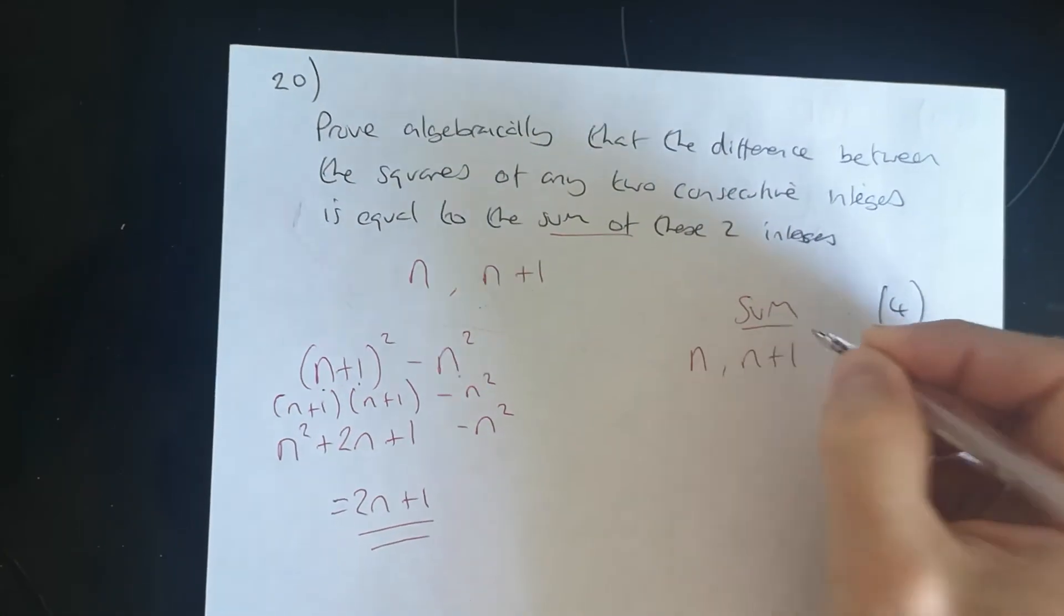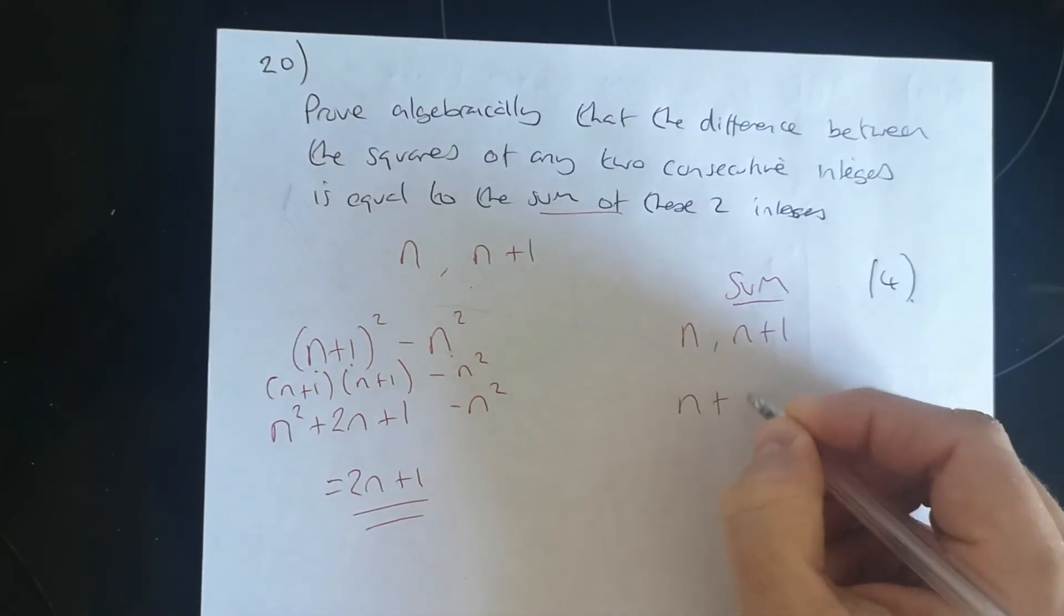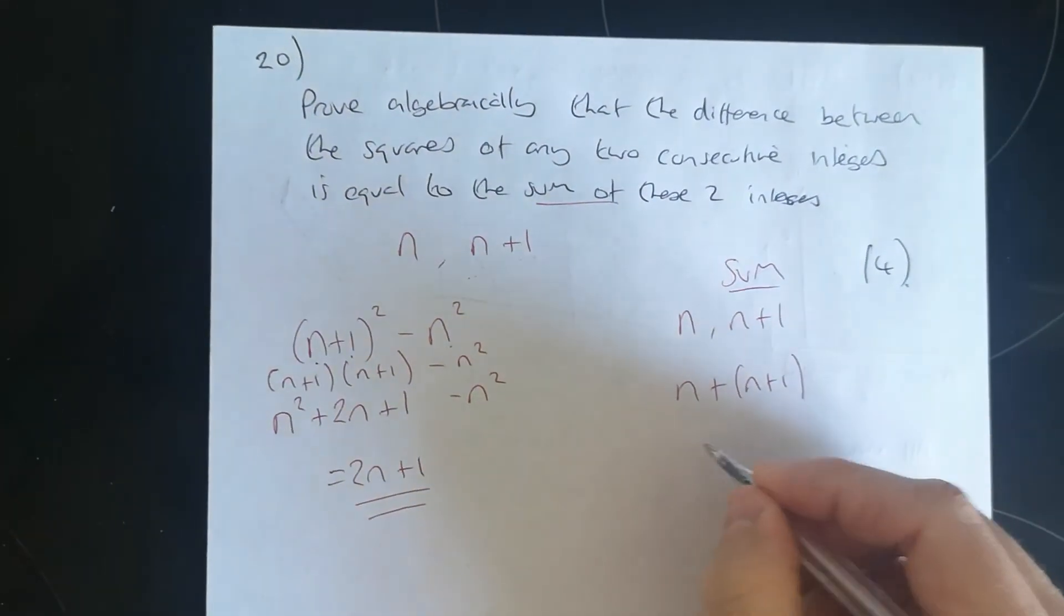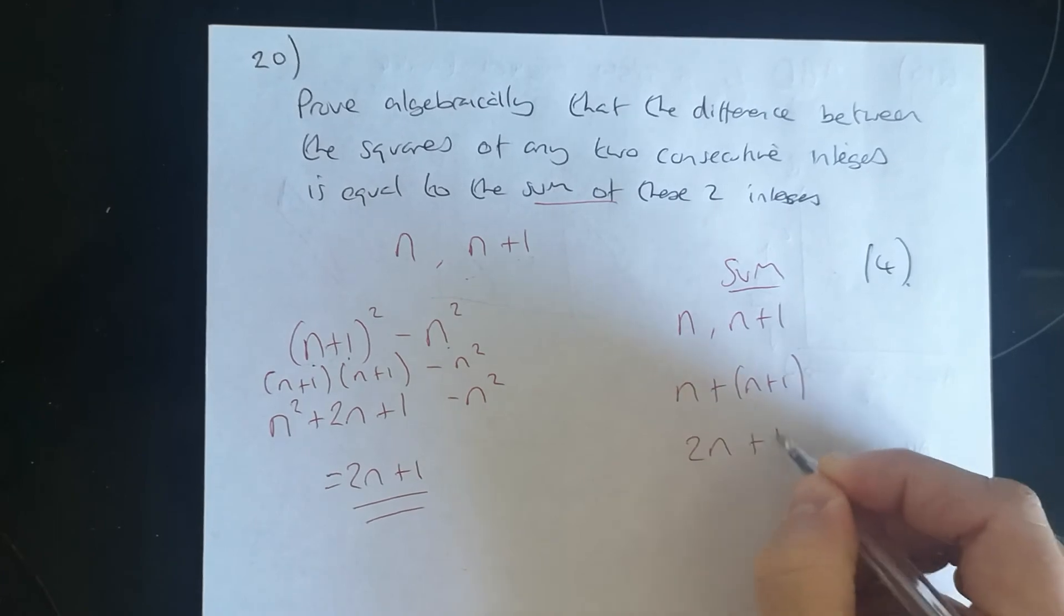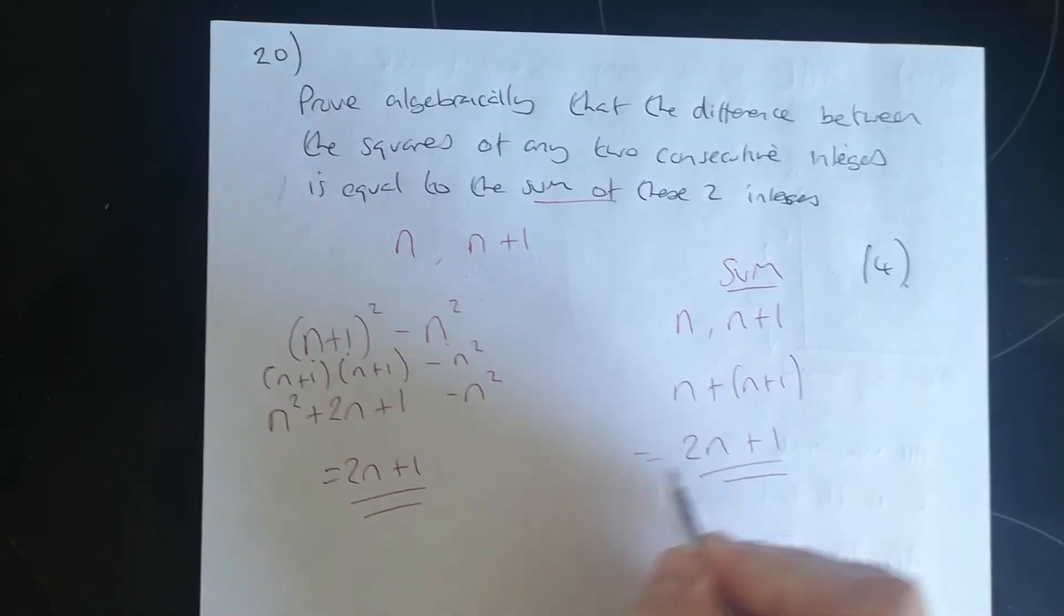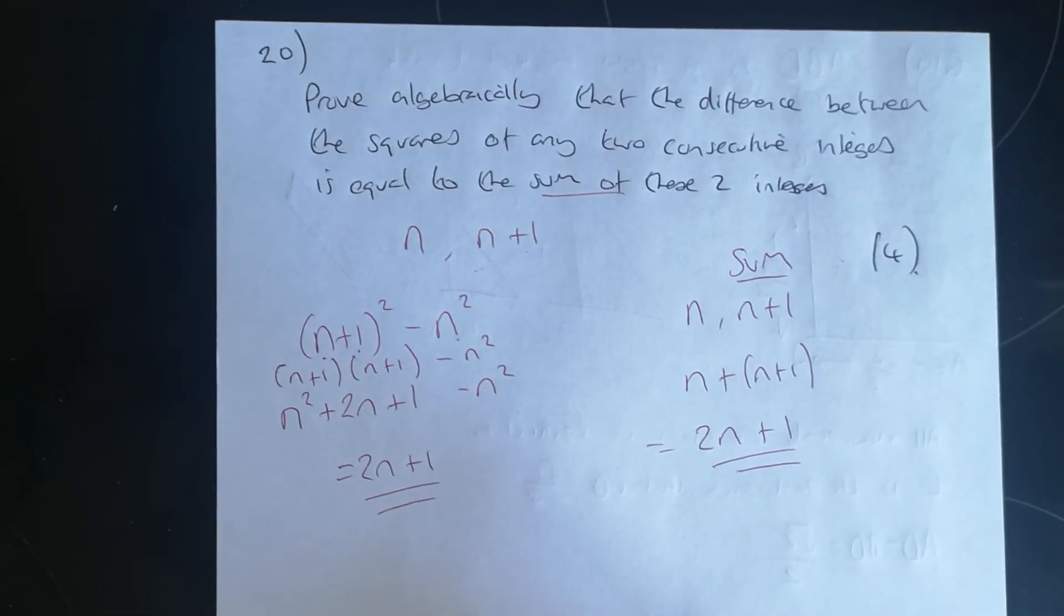so for the sum, we add them. So n plus n plus 1 is 2n plus 1. Look at that. They're exactly the same. All right, so that's the proof.